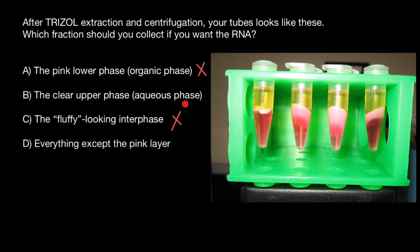Variant B, the clear upper phase, aqueous phase. This is exactly where we can find RNA. So this is going to be our choice.